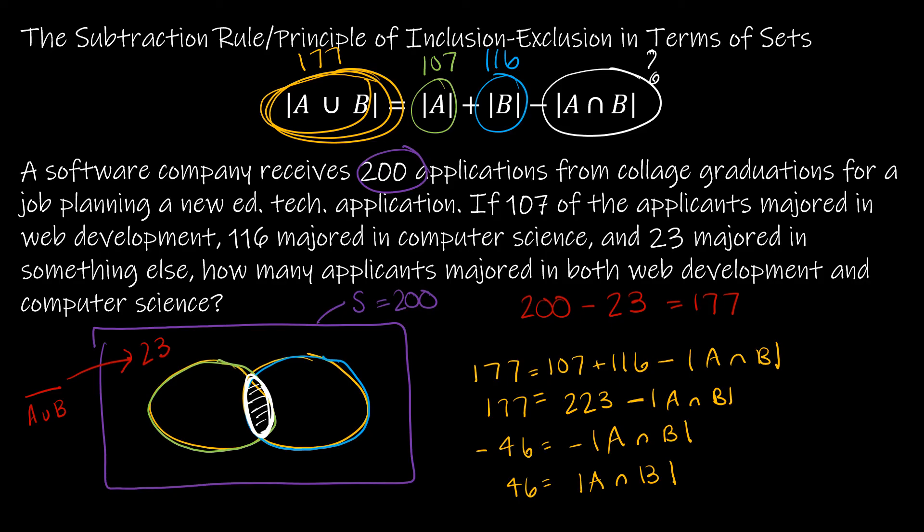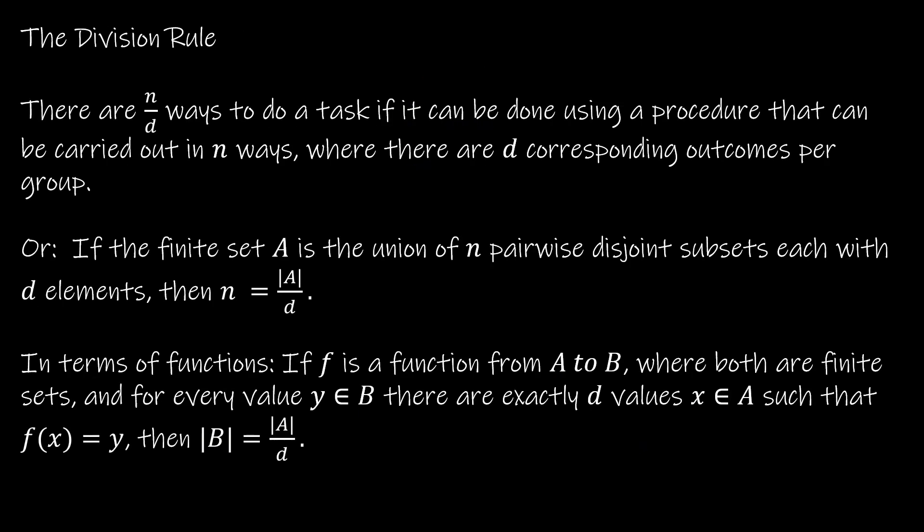When you're doing a story problem, please make sure that you understand you're answering a story problem with a sentence. So yes, I have found the correct solution, 46. But the question said, how many applicants majored in both web development and computer science? So make your professor happy and say there were 46 students who majored in both web development and computer science.